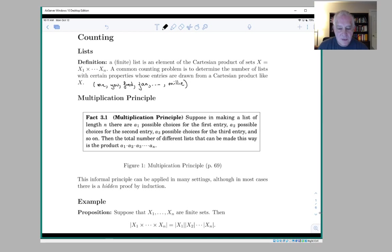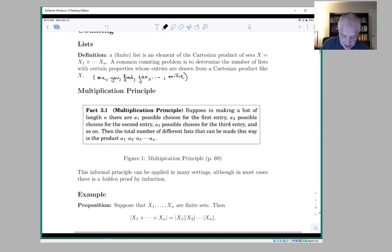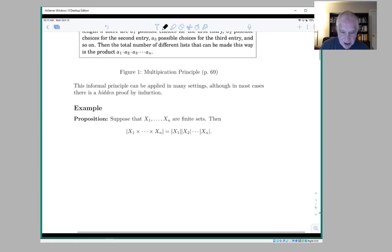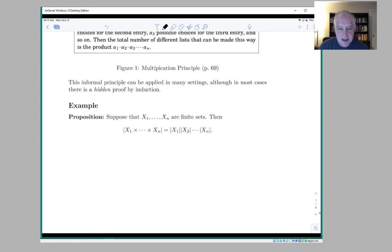And one way to make this more formal is by a fact which we kind of talked about already long ago when we were talking about Cartesian products, which is that suppose you have a collection of sets which are finite, x1 up to xn, and you look at the number of elements in their Cartesian product, then the number of elements in their Cartesian product is the product of the number of elements in each set.